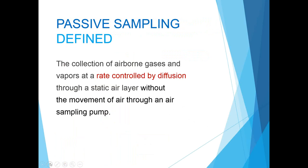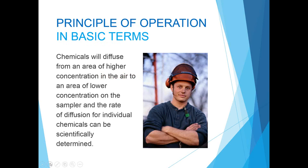Let's begin our discussion with the definition of passive sampling that can be found in scientific reference books. Passive sampling is the collection of airborne gases and vapors at a rate controlled by diffusion through a static air layer, without the movement of air through an air sampling pump. In very basic terms, chemicals will diffuse from an area of higher concentration in the workplace to an area of lower concentration on the sampler itself.